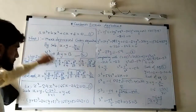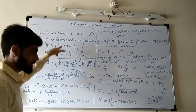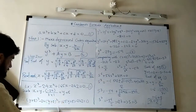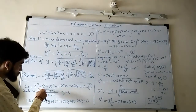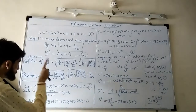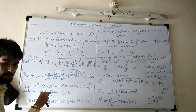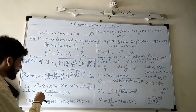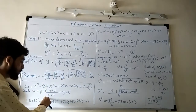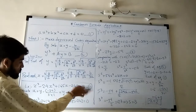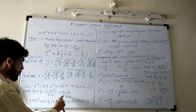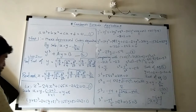The first step is to substitute x equal to y minus b over 3. In this equation, my b is minus 24 and a is 1. So substituting x equal to y minus (minus 24) divided by 3 times 1, after cancellation, we get x equal to y plus 8. This is our substitution.